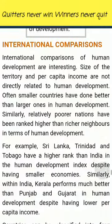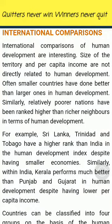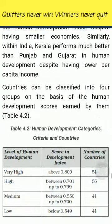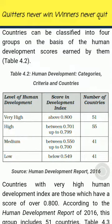International Comparisons. International comparisons of human development are interesting. Size of the territory and per capita income are not directly related to human development. Often smaller countries have done better than larger ones. Similarly, relatively poorer nations have been ranked higher than richer neighbours in terms of human development. For example, Sri Lanka and Trinidad and Tobago have a higher rank than India in the HDI despite having smaller economies. Within India, Kerala performs much better than Punjab and Gujarat in human development despite having lower per capita income. Countries can be classified into four groups on the basis of their human development scores.